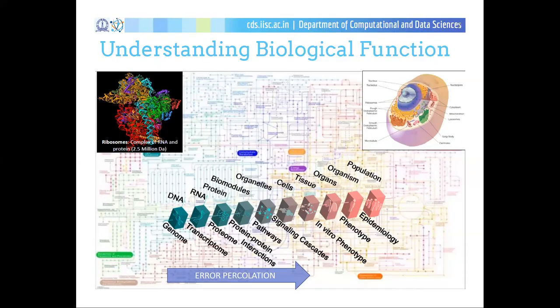This is the basic philosophy my lab follows. There is a concept of error percolation: if you do an erroneous job at the genome, transcriptome, or proteome level, then when you want to discover new phenotypes, make epidemiological or tissue-based analysis, those would have a lot of noise and error. So we try to integrate different techniques, make new algorithms, and see how we can do things better. I will list some of the tools you can use from my lab and then introduce the new tools.